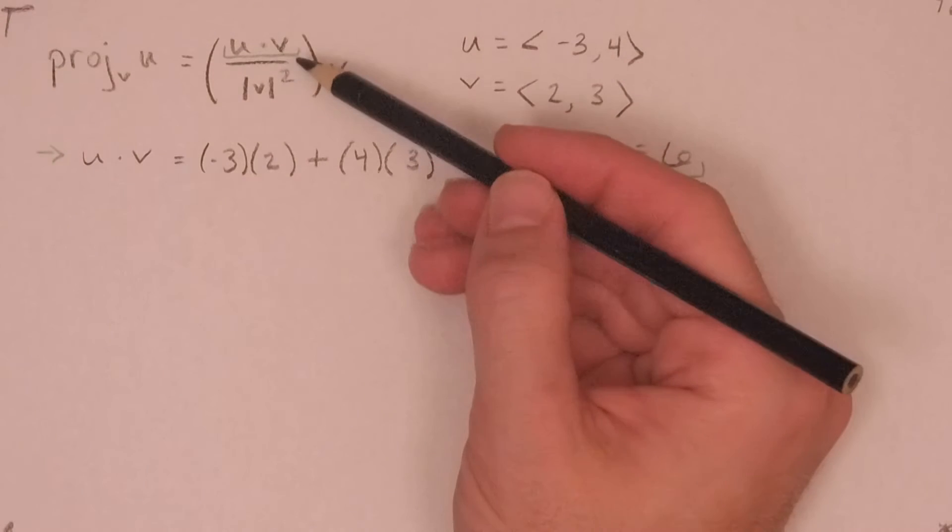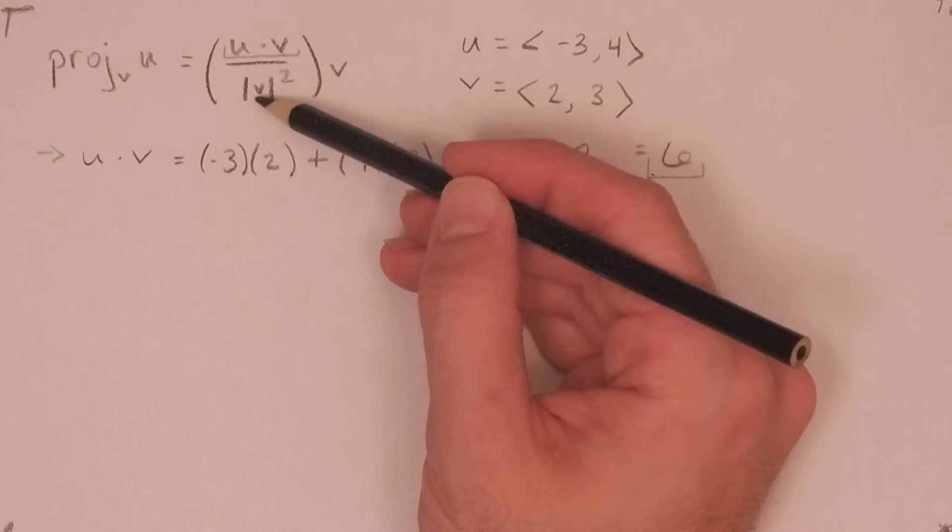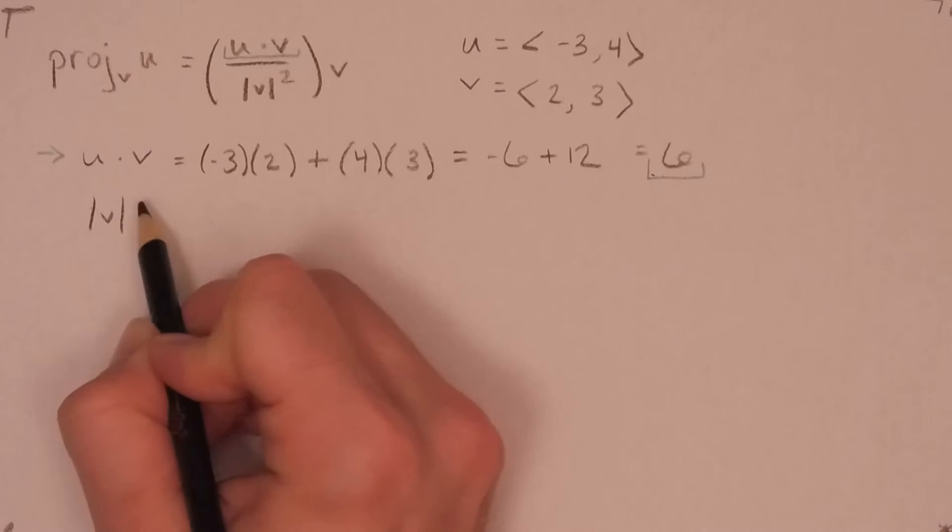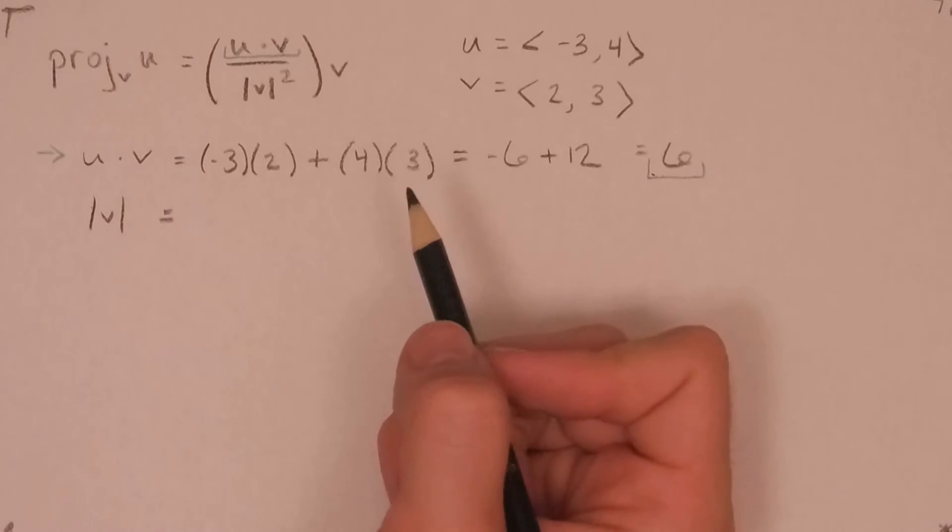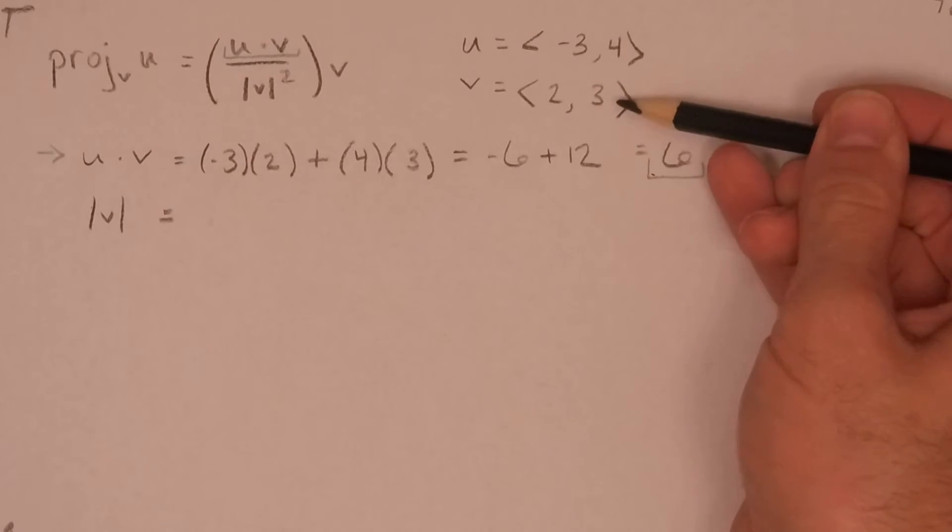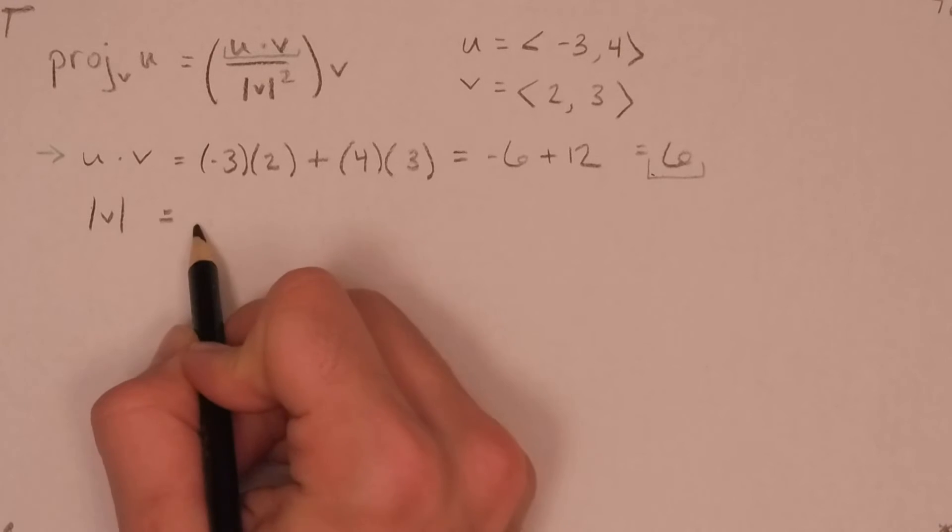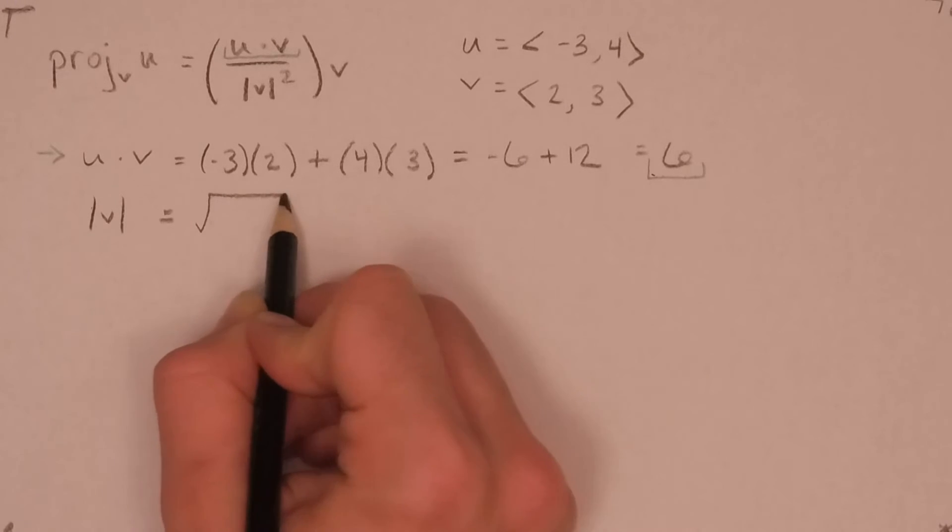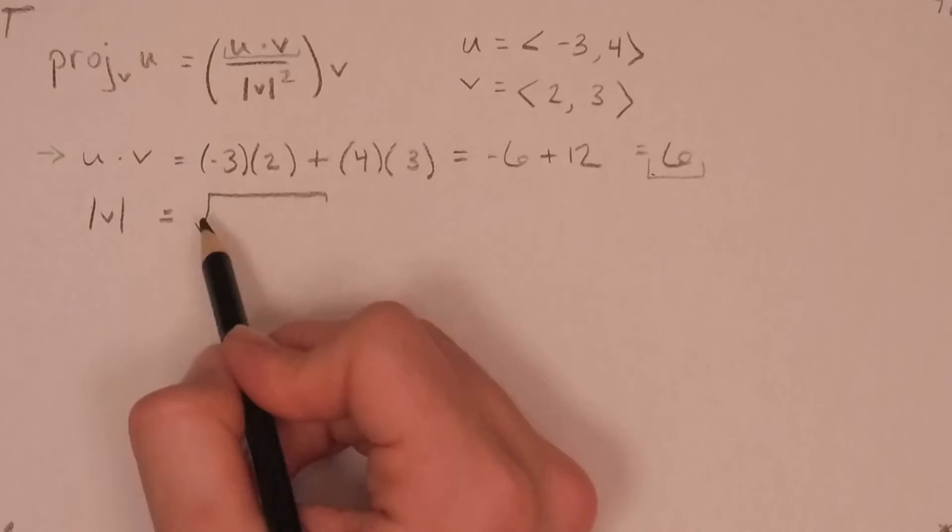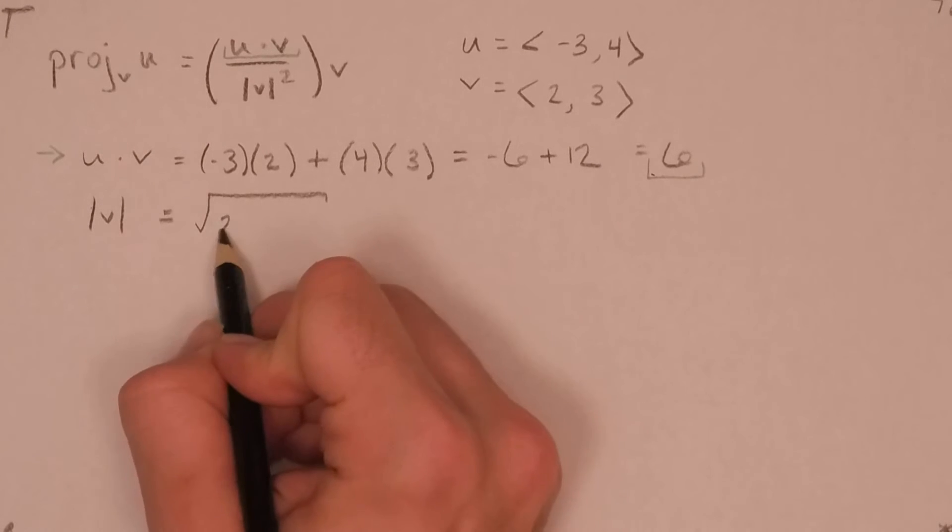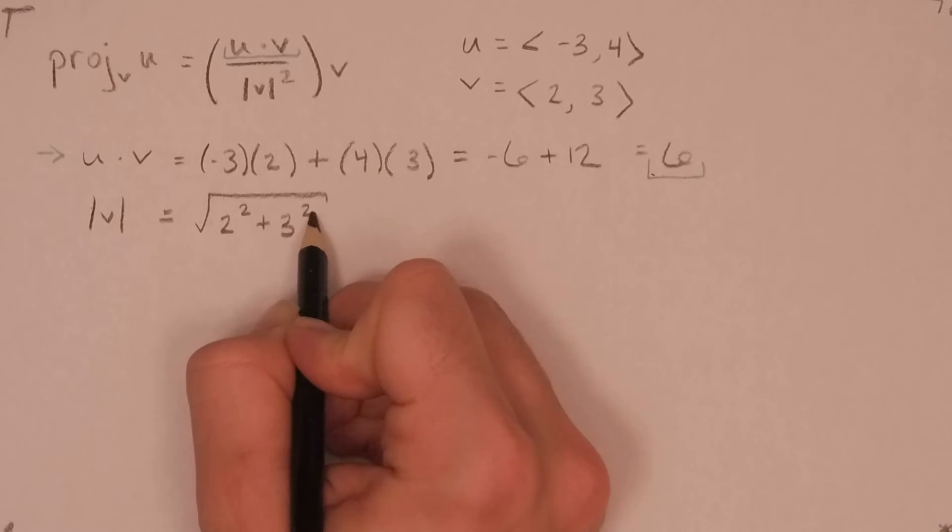All right. Well, next, the next thing we're going to need is this magnitude of v squared. Let's take that here. And let's first look at the magnitude of v. So the magnitude of v, here's our vector v. It's 2, 3 for the components. When we take the magnitude of a vector, we take the square root of the components squared and add it together. So I'm going to take 2 or square that. We're going to add it to 3 squared.